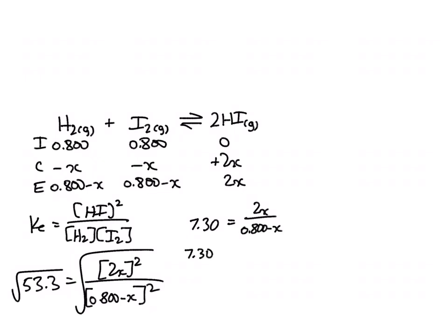Doing the math here, 7.30 times 0.800 minus X equal to 2X. Times 0.800, 5.84 minus 7.30X equal to 2X.